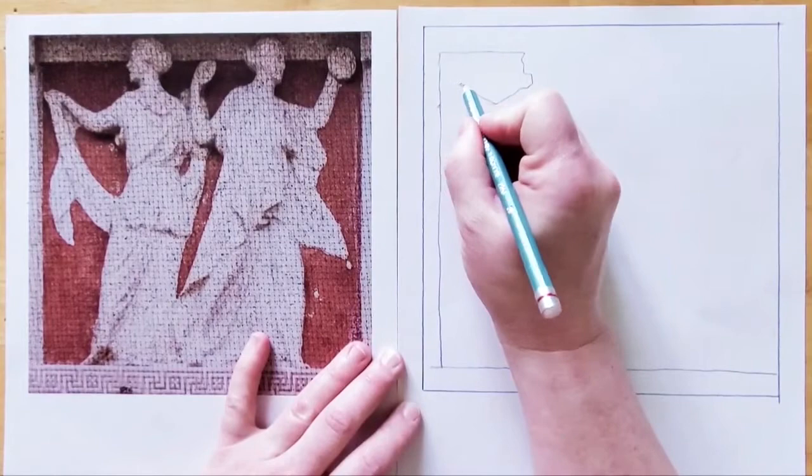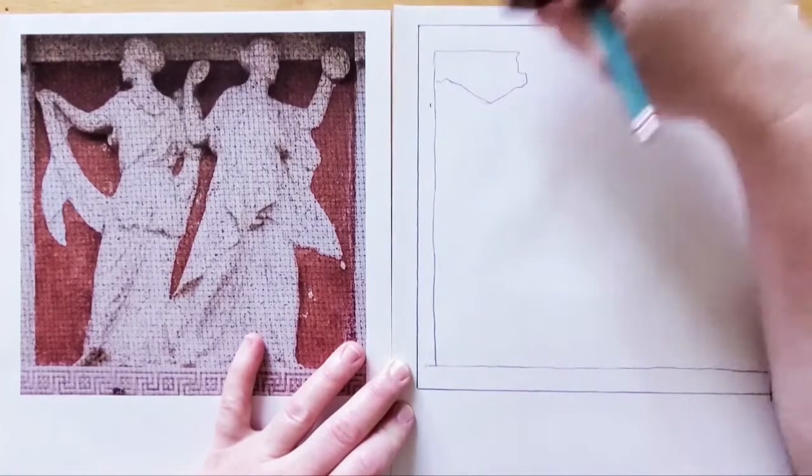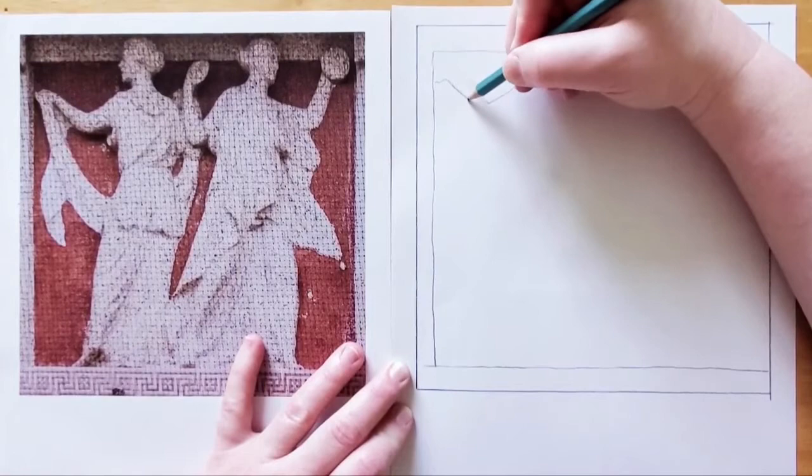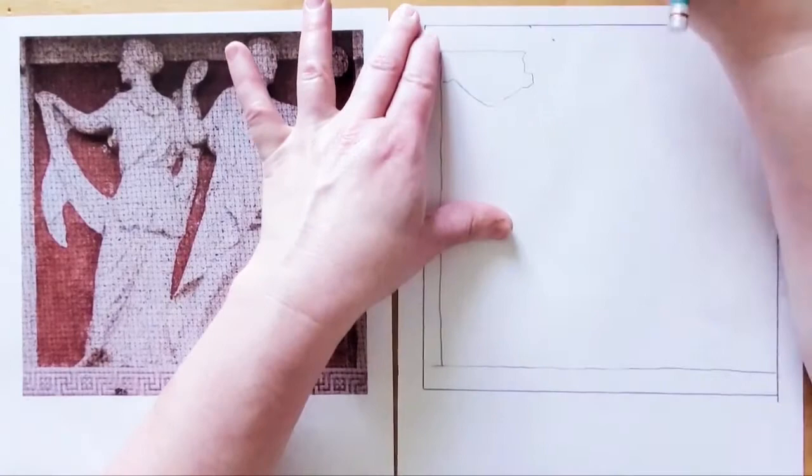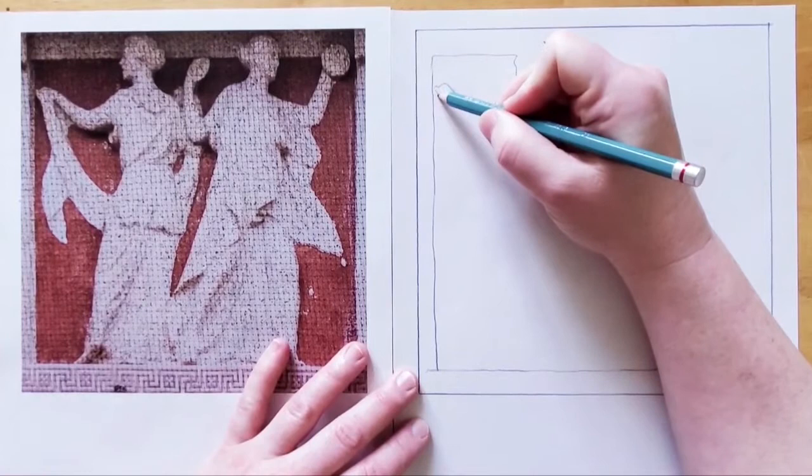It's okay to make mistakes. Don't be afraid to move something and to try again. Now we're trying to get the space in between her scarf and the wall. Look at the space as its own shape.